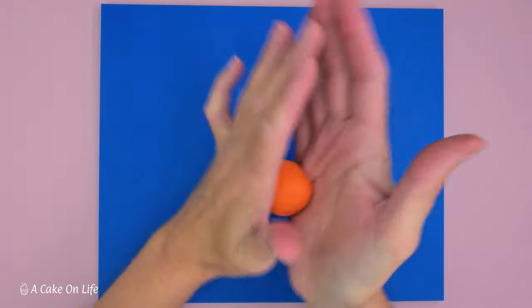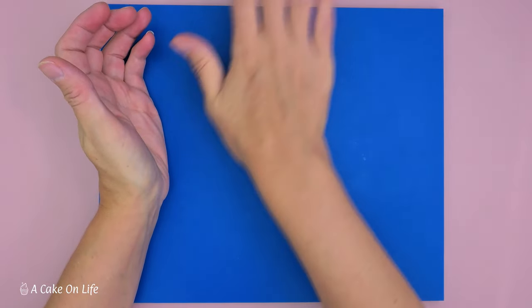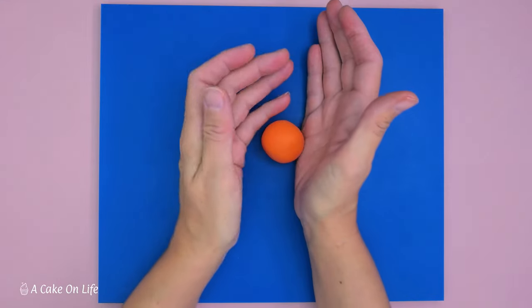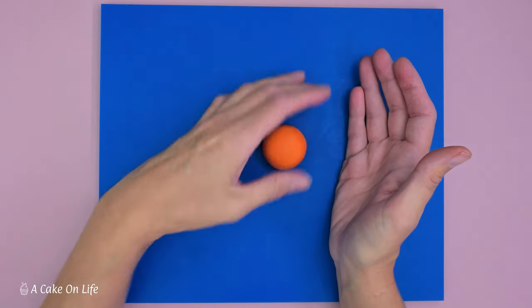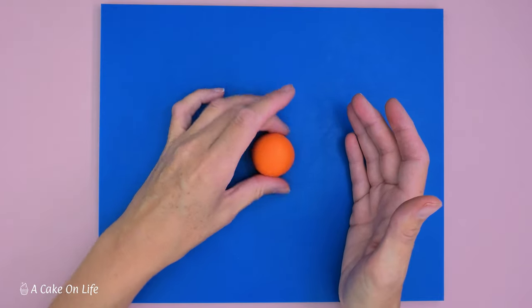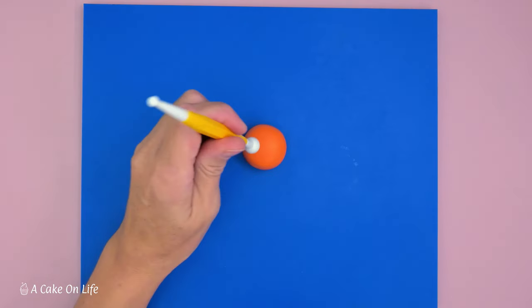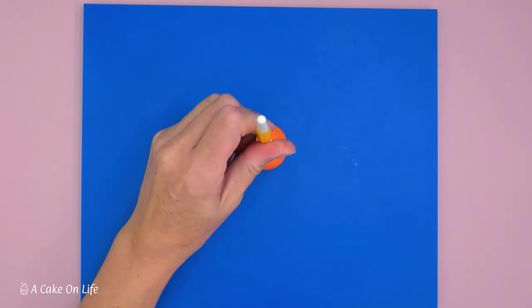I've just kneaded my paste into a ball and then I'm going to form it into a ball shape. Now I'm just going to flatten the top slightly and just make sure it's nice and rounded before I take a ball tool and just gently press down in the middle there.